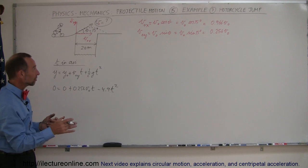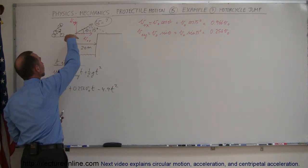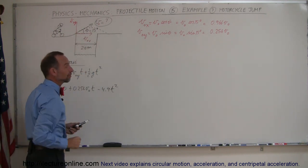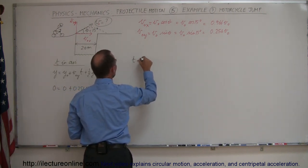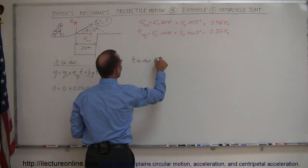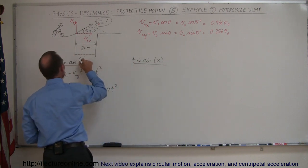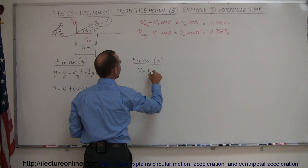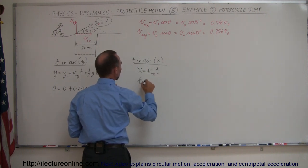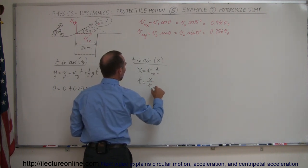But we can do the same for the x direction because time in the air for the y direction must be equal for time in the air for the x direction. So let's do that. Time in the air using the x direction equation, this was time in the air using the y direction, so we have x equals v initial in the x direction times time or time is equal to x divided by v initial in the x direction.